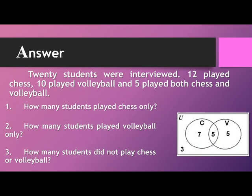We already completed our data on the Venn diagram, so now we can answer the following questions. How many students played chess only? The answer is seven students. Number two, how many students played volleyball only? The answer is five students. And last, how many students did not play chess or volleyball? The answer is three students.